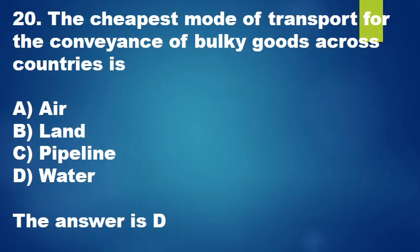Question 20: The cheapest mode of transport for the conveyance of bulky goods across countries is: A. Air, B. Land, C. Pipeline, D. Water. The answer is D.